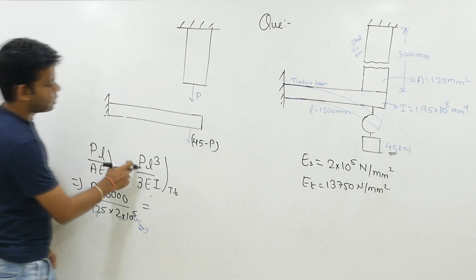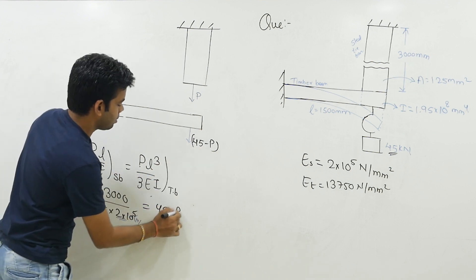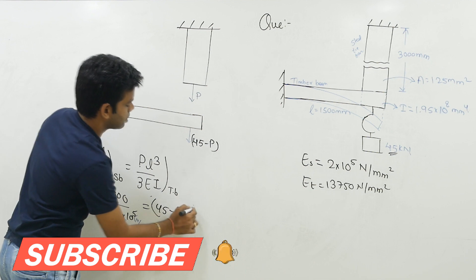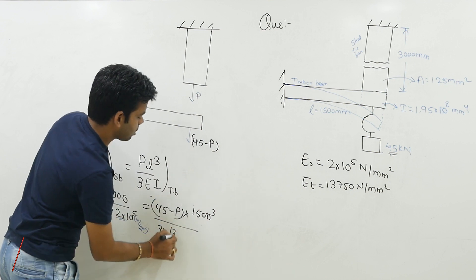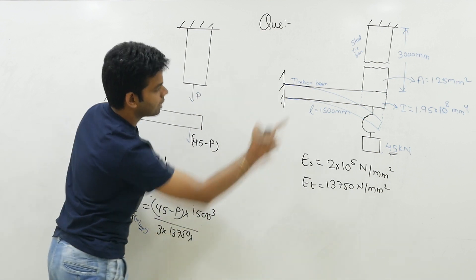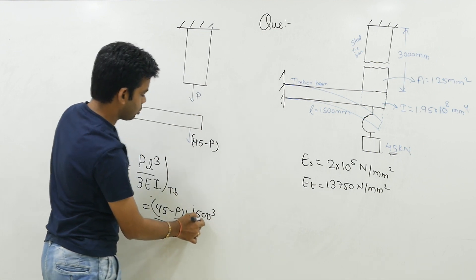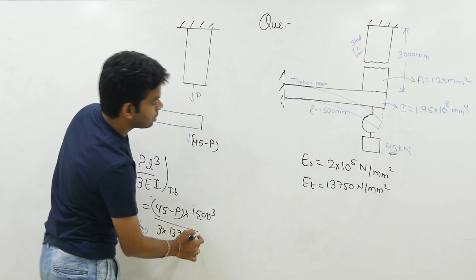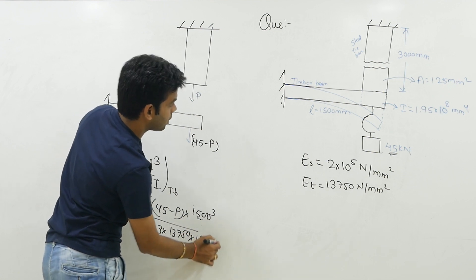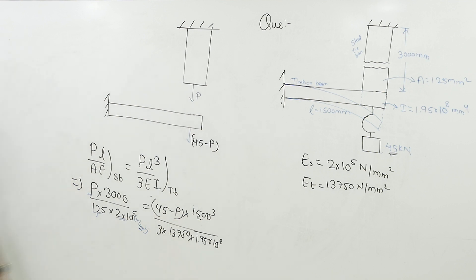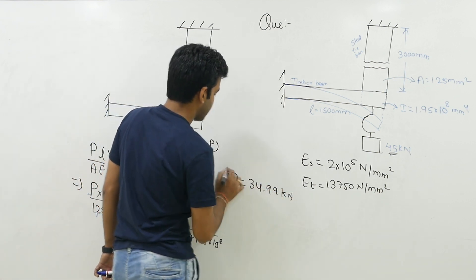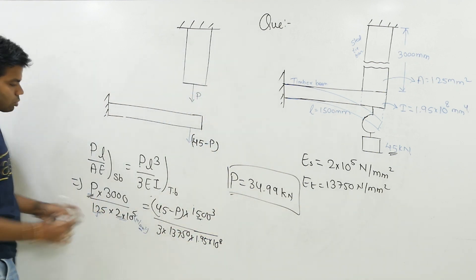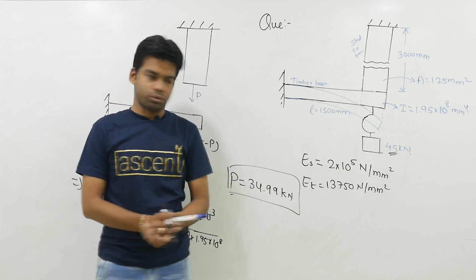This will be equal to (45 minus P) × L³, which is 1500³, divided by 3 × E of timber which is 13,750, × I of timber which is 1.95 × 10⁸ mm⁴. From here you will get the value of P, and this P will be equal to 34.99 kilonewton.